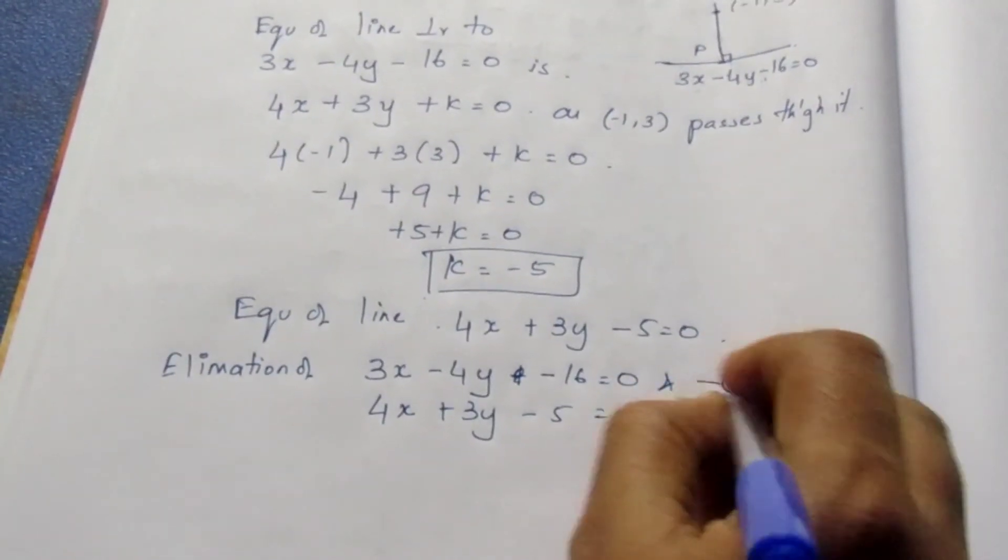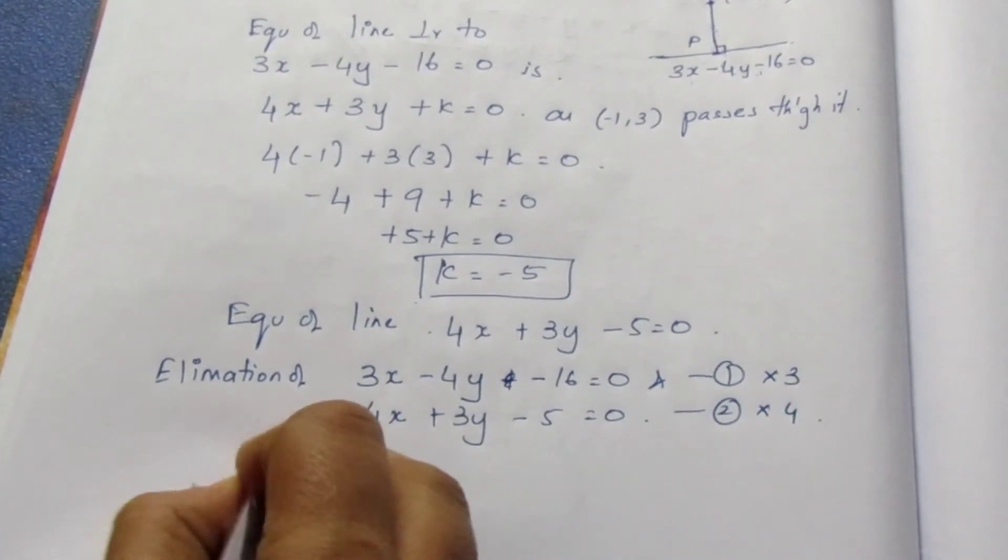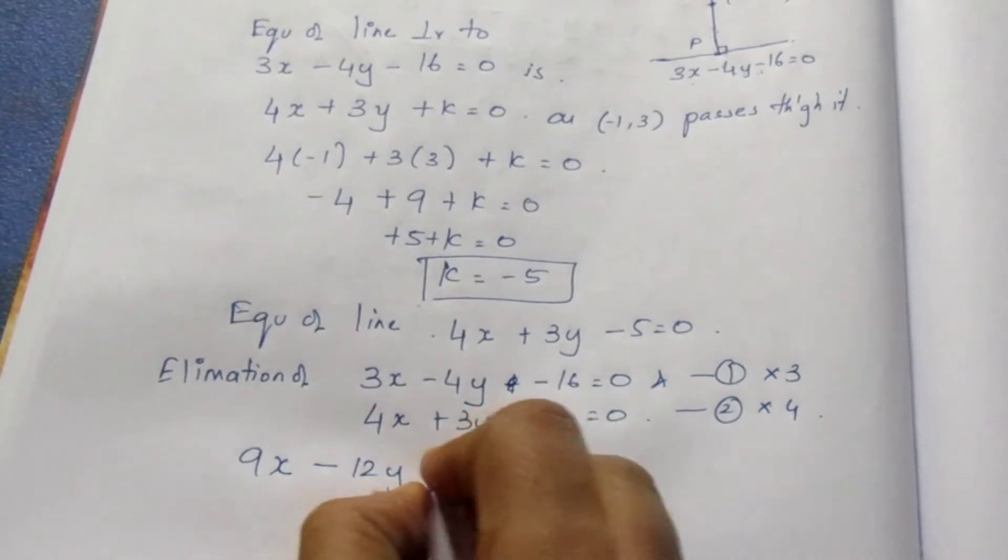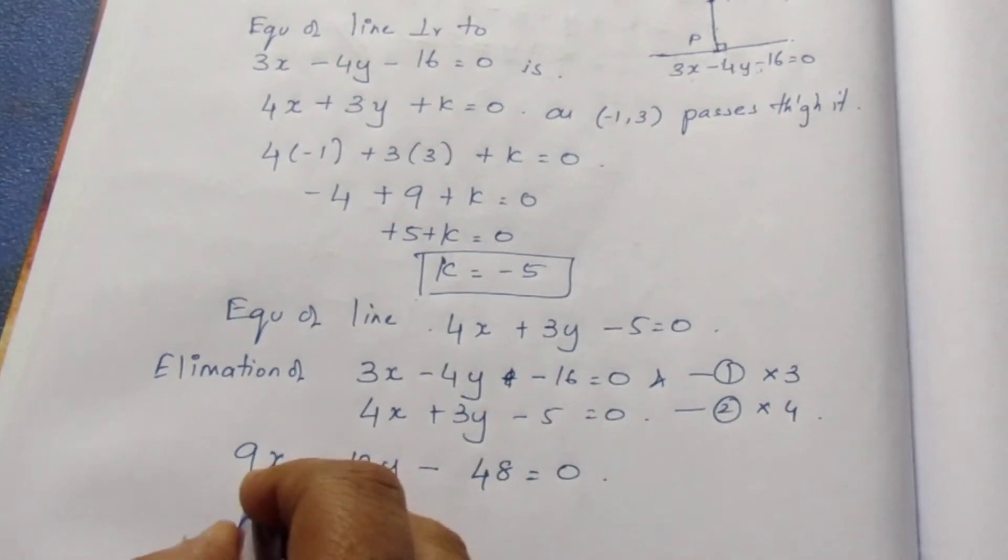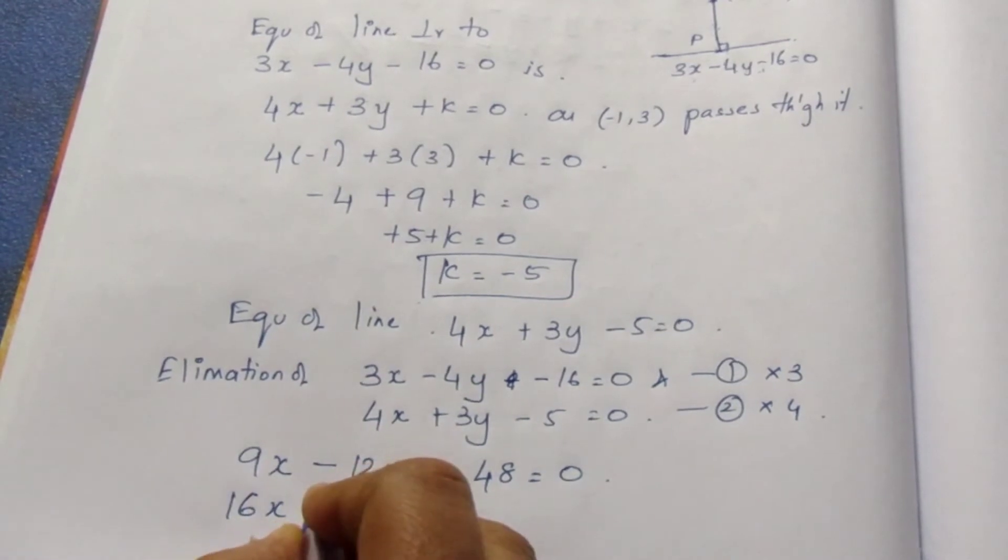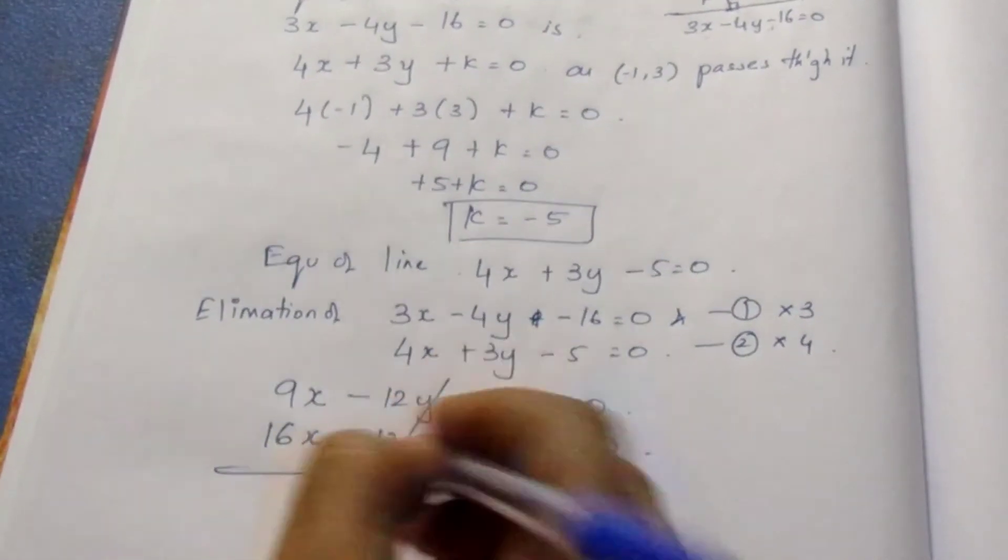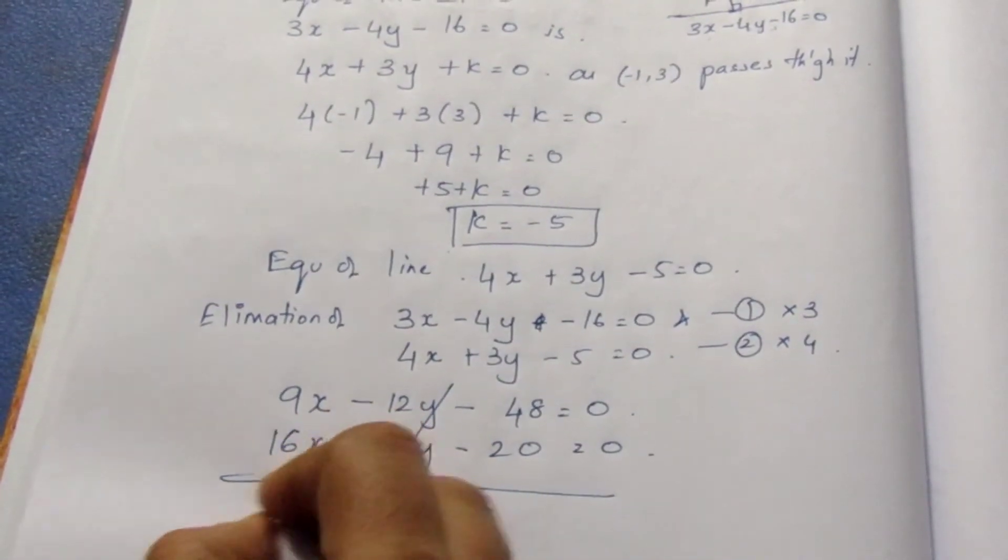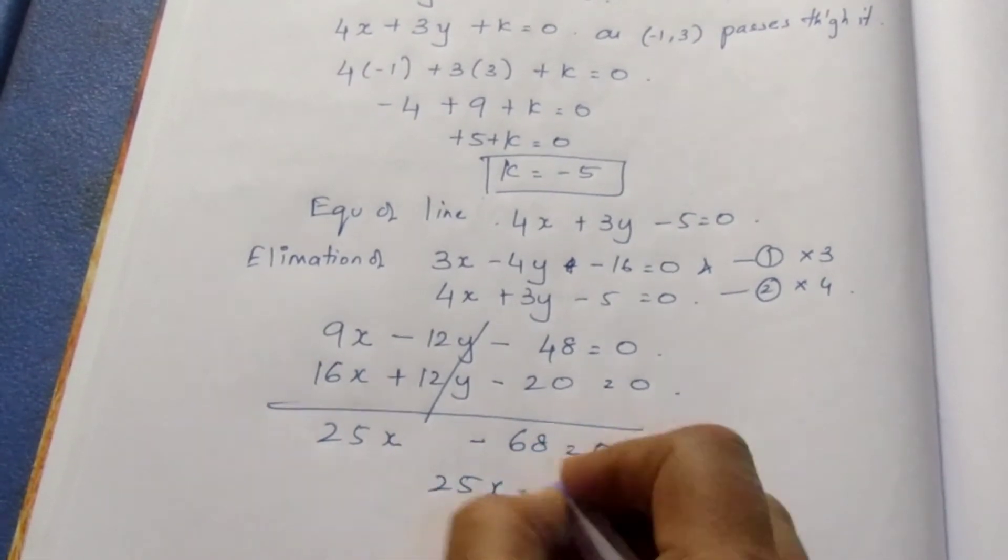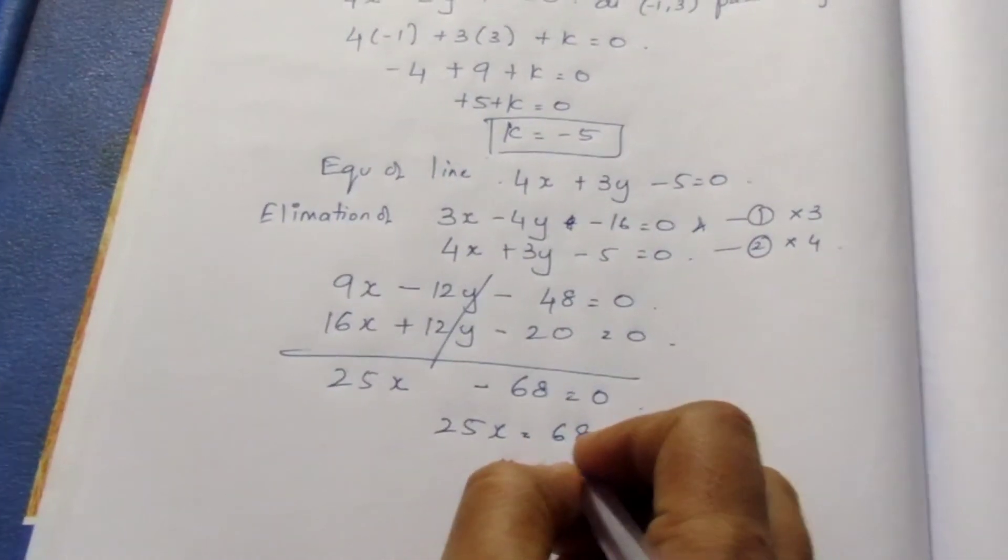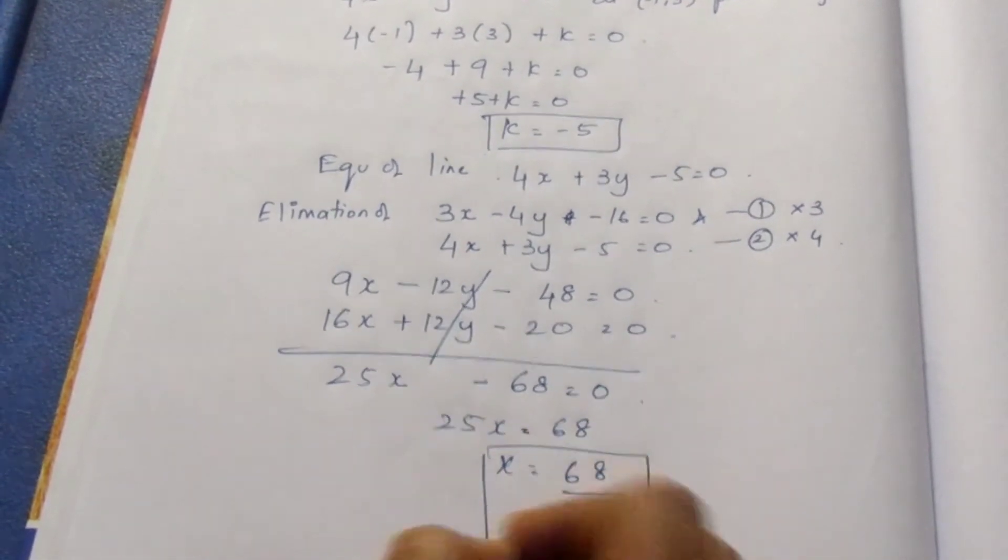Now this is equation 1 and equation 2. I am multiplying this with 3 and this with 4. I get 9x - 12y - 48 = 0. Here, 16x + 12y - 20 = 0. Now just adding, this gets cancelled here, this gets cancelled here, it becomes 25x - 68 = 0. Now 25x = 68, x = 68/25. So we have found the x value.